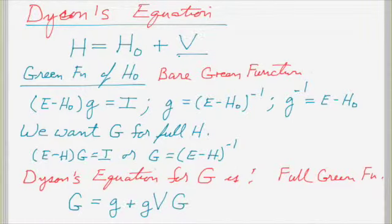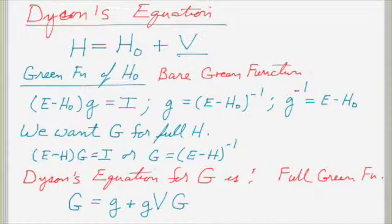We'll talk about the new homework after we finish all this recursive Green's function stuff, because it's all based on what's in chapter four. So if there are no questions, I'm going to start going over what we did almost two weeks ago. We introduced Dyson's equation, which is the foundation for our recursive Green's function algorithm used to numerically efficiently calculate parts of the Green's function we need, like the diagonal blocks and the first block column.